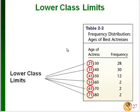A frequency distribution looks like this: we have categories here — numerical categories — and then the frequency for each category. In this case, if we have the ages of actresses, a frequency of 28 would mean that there were 28 actresses between the ages of 21 and 30.